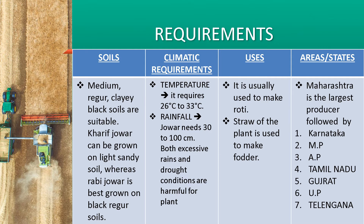Jwar is used for making roti. The dough of Jwar flour has a dark color and is used to make thick chapati similar to cement in consistency. These chapatis are mostly given to people who do hard physical work. The major producing areas include Maharashtra as the leading producer, followed by Karnataka, Madhya Pradesh, Andhra Pradesh, Bihar and Rajasthan.